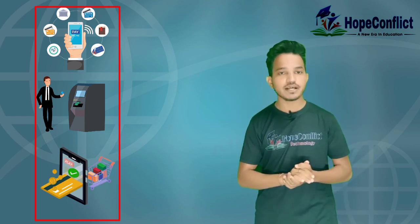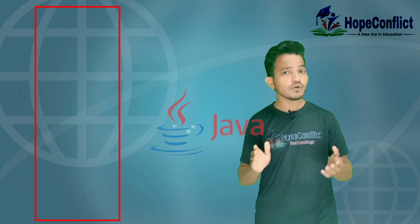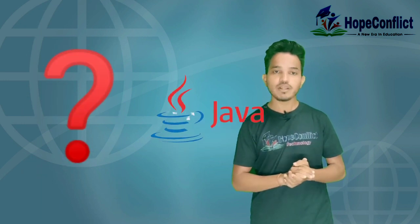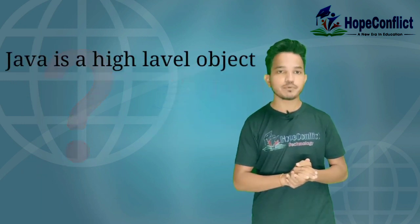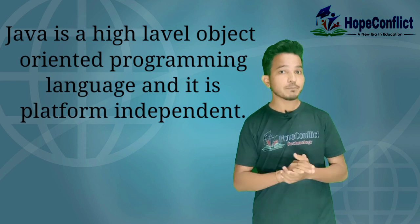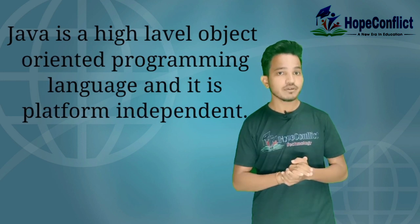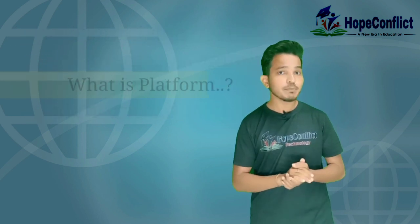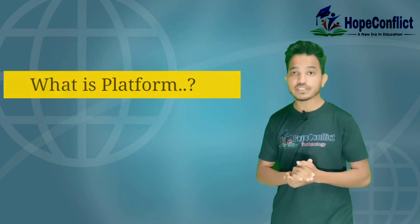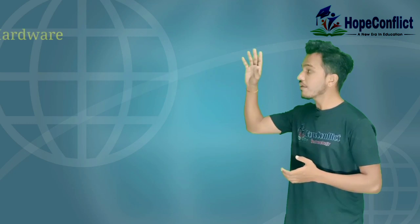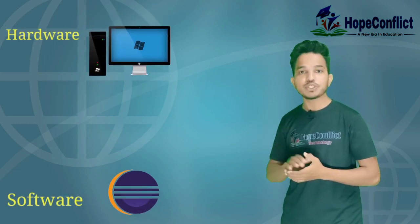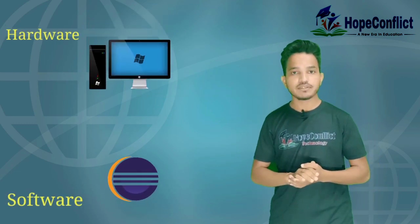So what is meant by Java? Java is a high-level, object-oriented programming language and it is platform independent. What is meant by platform? Platform is a combination of hardware and software in which programs are run.